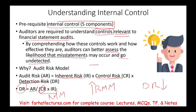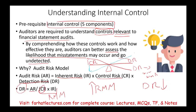If we put control risk and detection risk on a seesaw — control risk on one end, detection risk on the other — if control risk is high, it means you cannot rely on the controls, the controls are risky, and detection risk is low. Detection risk is low means we have to do more work. The opposite is true: if control risk is low, then detection risk is high, meaning we can do less work because we can rely on good internal controls.